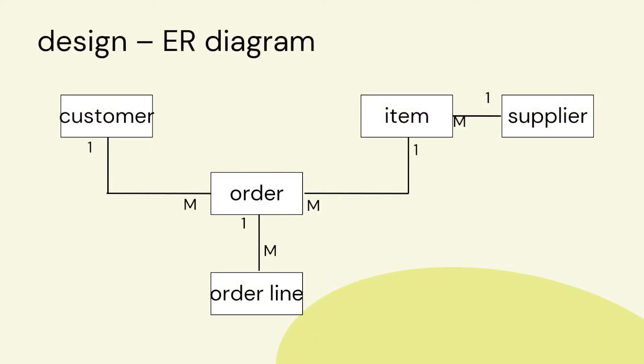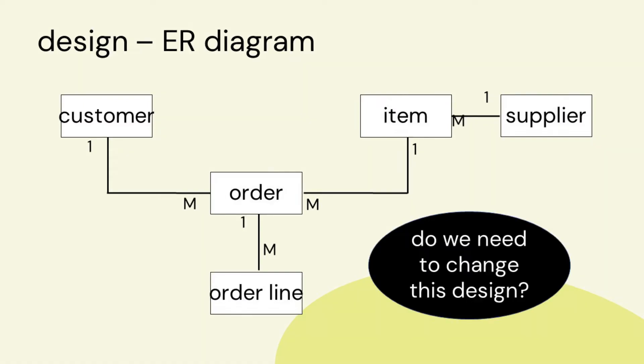We've got other things to think about like supplier, etc., but what we need to do to start off with is just focus on what we absolutely need, and then we can add those additional tables later. So let's start with what we need: a customer, an item, and the order. And in our design we've got an order line entity, because we want different items to be sold rather than just one item per order.